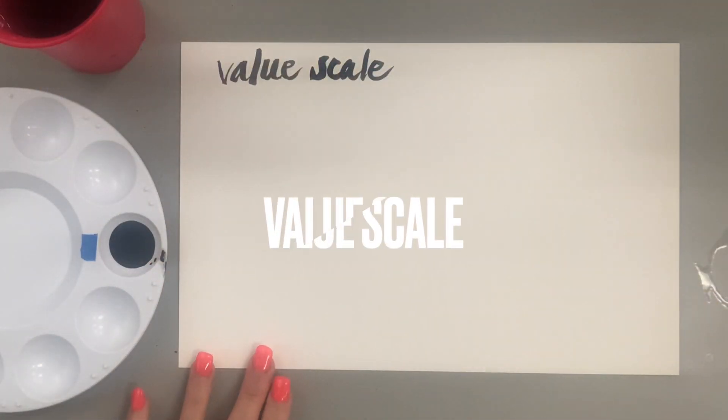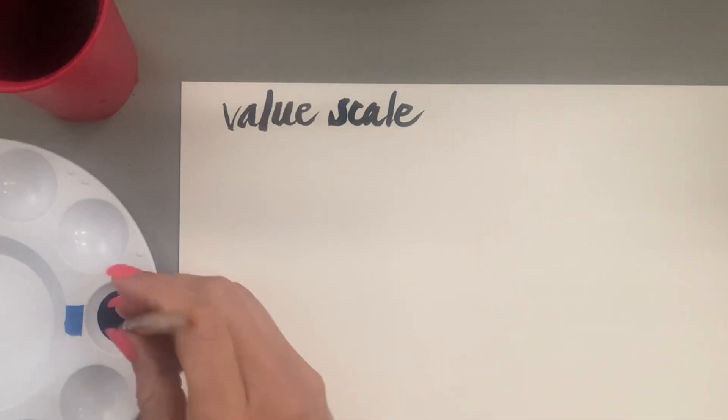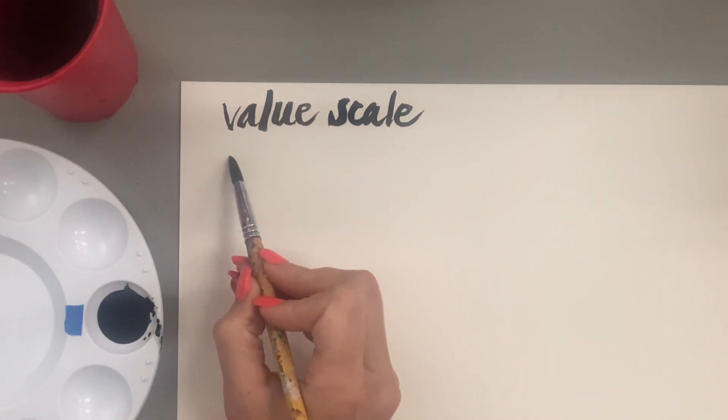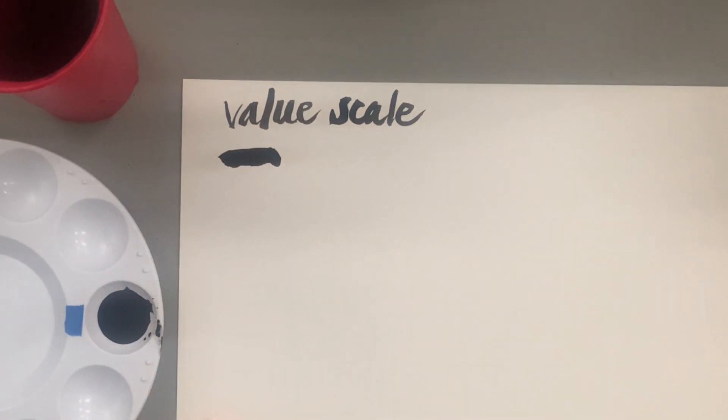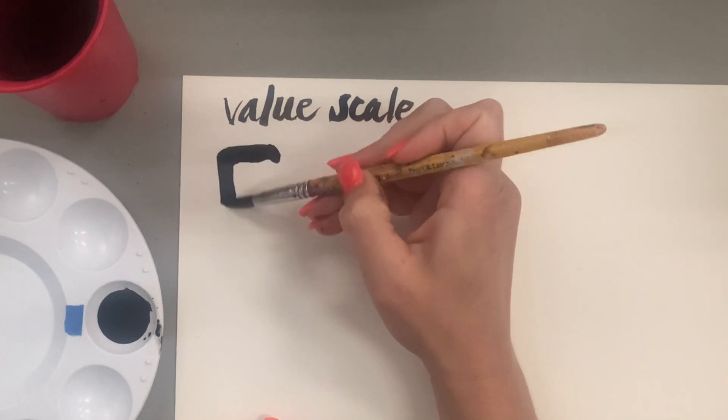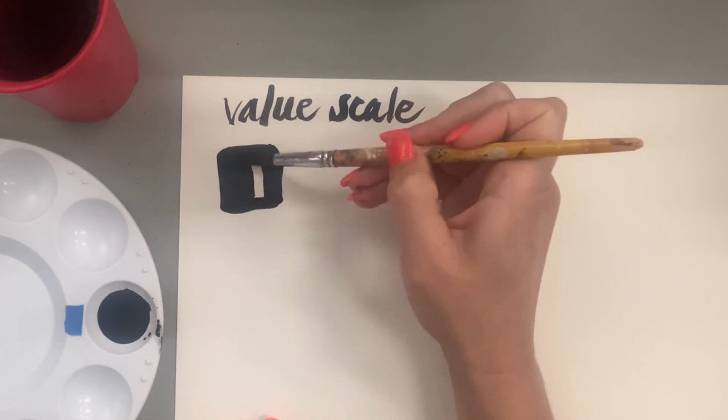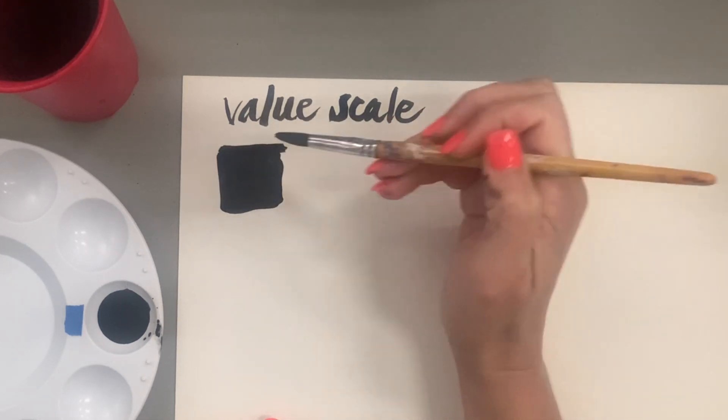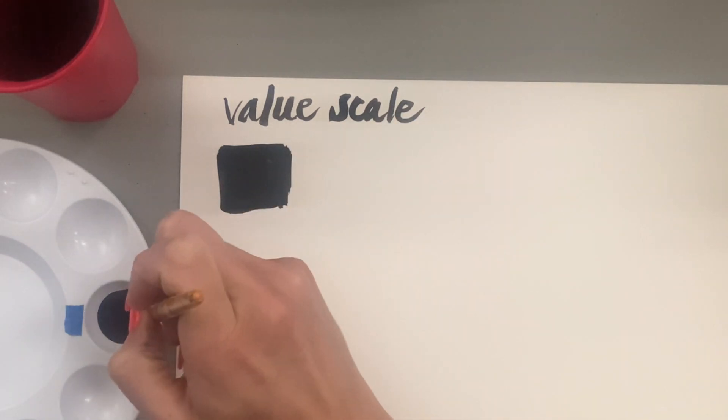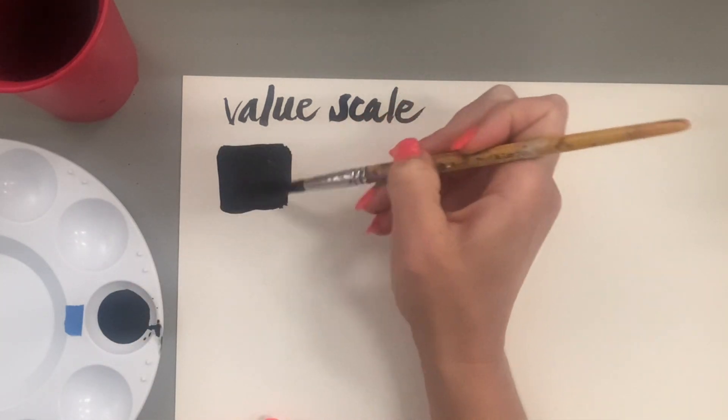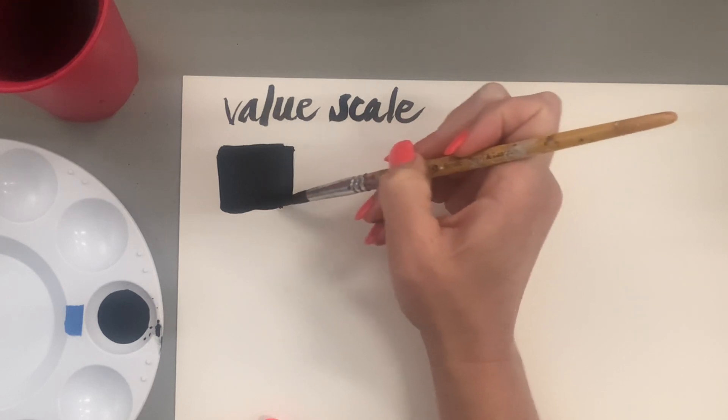A value scale is a series of dark to light values progressively going from one direction to the other. With India ink, I always like to start with black, so the first paint area is going to be pure black India ink. Make sure you don't have water on your brush because the water will dilute the India ink.